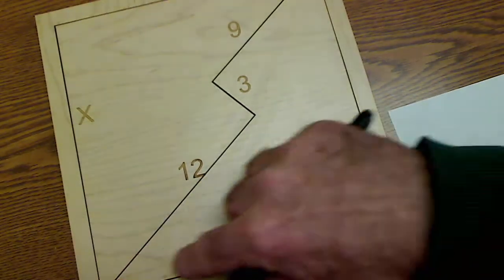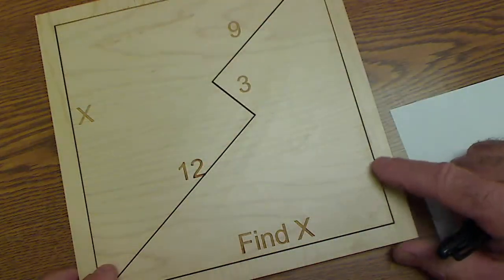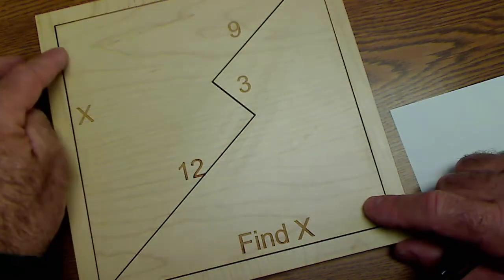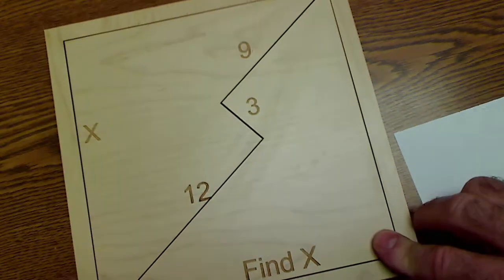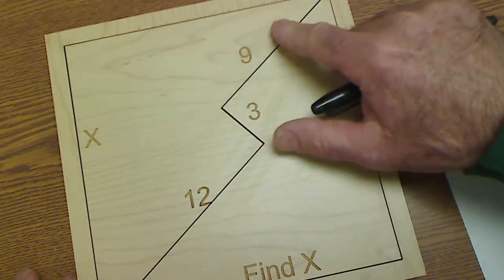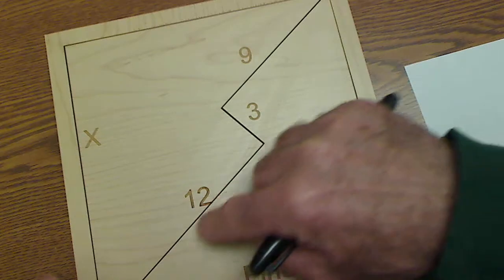So this is a square, and the goal is to find the side of the square. So find this length right here, X. Then I have this. It's not quite a diagonal of 9, 3, and 12.